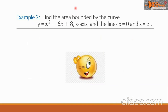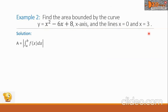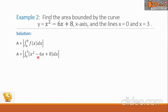Example 2: Find the area bounded by the curve y equals x squared minus 6x plus 8, the x-axis, and the lines x equals 0 and x equals 3. First, we write the area formula, then substituting the corresponding values, we get A equals the absolute value of the definite integral from 0 to 3 of x squared minus 6x plus 8 dx.